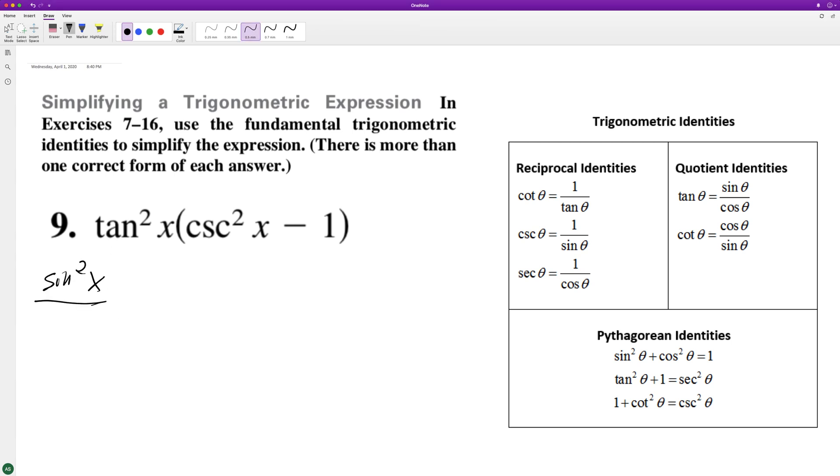it's sine squared x over cosine squared x, and cosecant is 1 over sine squared x, and then minus 1.